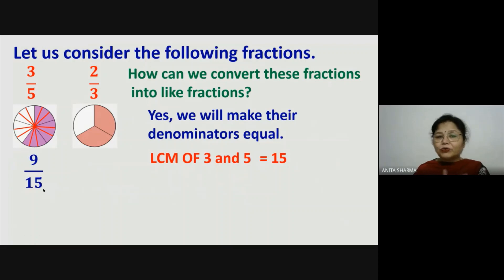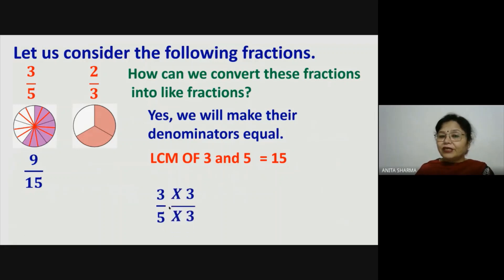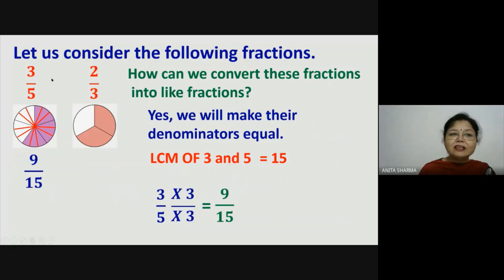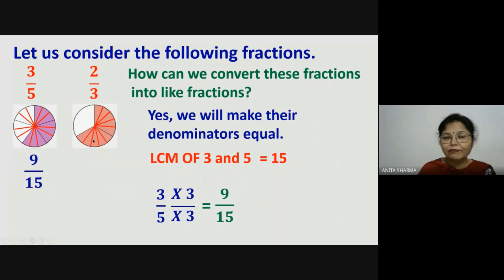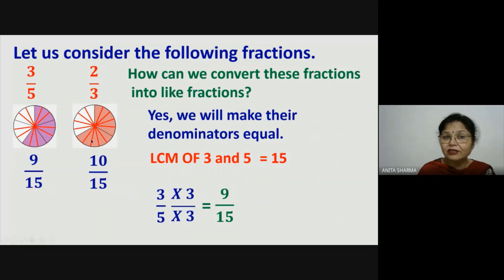Now for two-thirds, we also divide the whole into 15 parts. Since 3 fives are 15, we divide every unit into 5 parts. So this gives us 15 total parts. The 2 shaded parts convert into 10 — 5 and 5 make 10 — and 3 parts convert into 15. So two-thirds equals ten-fifteenths. We multiply numerator and denominator by 5: 2×5=10 and 3×5=15.